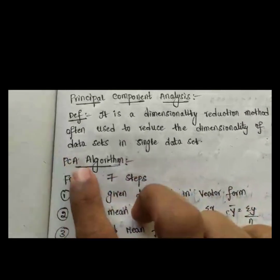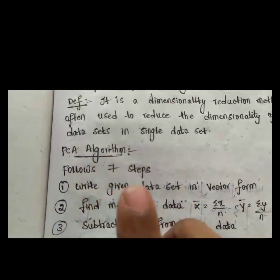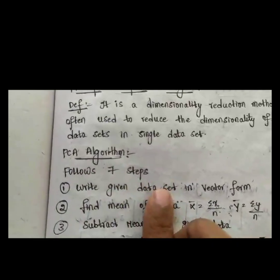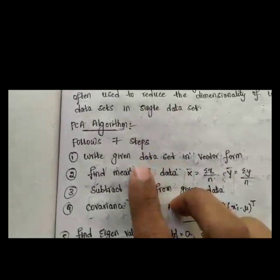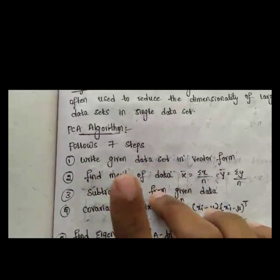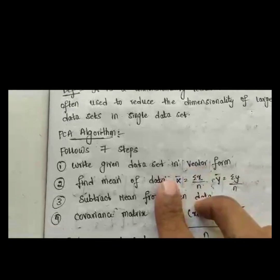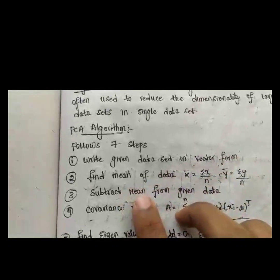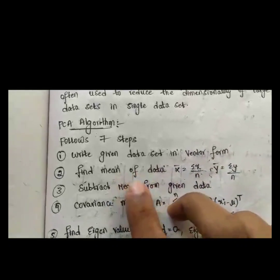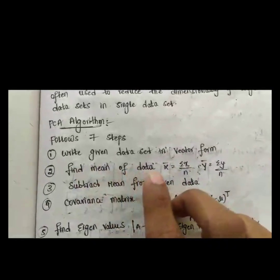The PCA algorithm follows seven steps. The first step is: we have to write the given datasets in vector form. The second step: using the given datasets, we have to calculate the mean of the data.